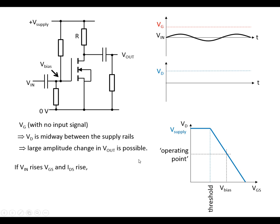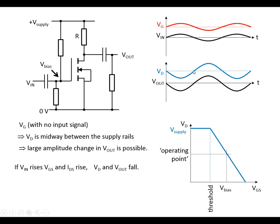If Vin rises, VGS also rises by the same amount, with the bias set by the voltage divider raising it up. This means the current through the resistor increases. Because the current affects the voltage at the drain, the voltage at the drain falls. So Vin goes up, Vg goes up, which means Vd goes down because current has increased. The change in Vd is carried through the capacitor, but the DC bias at the drain is blocked. So Vin rises, Vg rises, Vd goes down, and Vout goes down — it's inverting and amplified. The gradient of this slope gives us Vout over Vin.